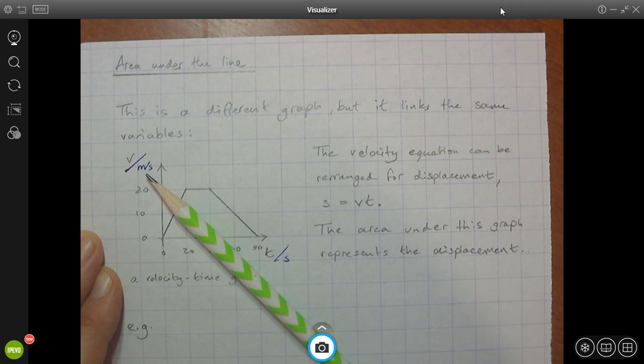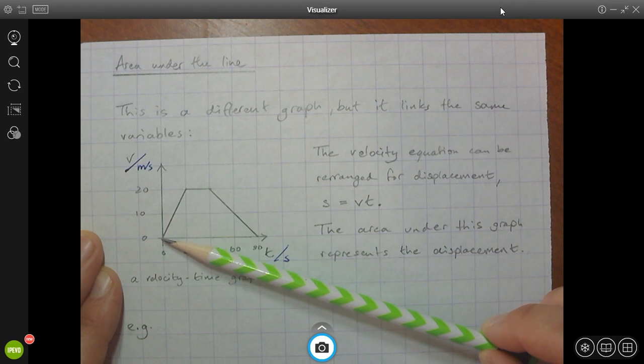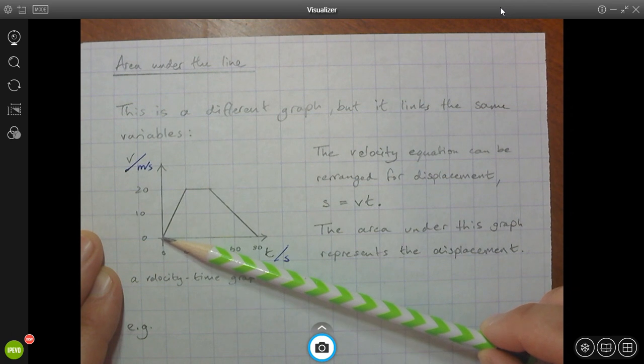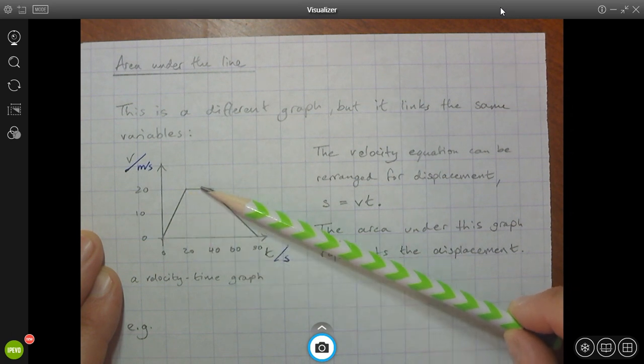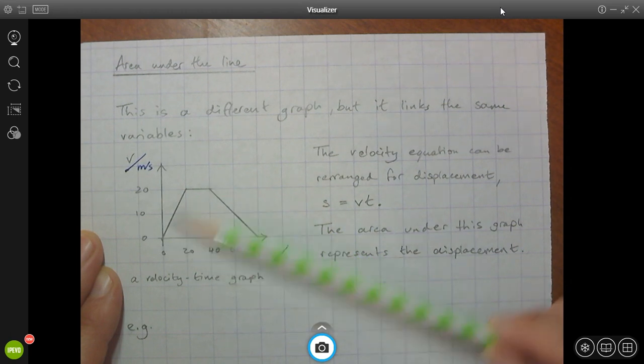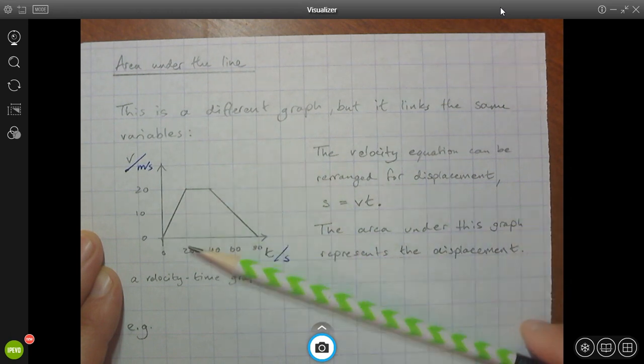The velocity given in meters per second here on this axis and the time given in seconds here along this axis. And we can see that this object must be, its velocity must be increasing for some time. And then it stays constant for some time. And then it decreases for some time. So it's a positive velocity. It's moving away from us the whole time. But at different rates.